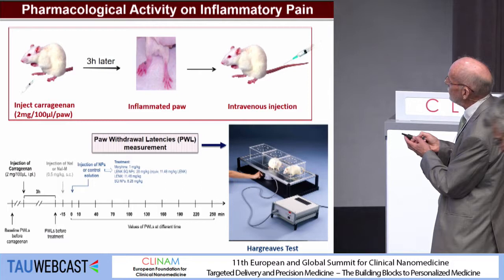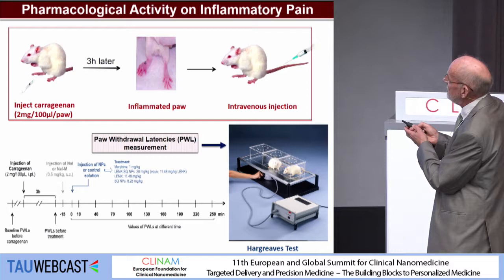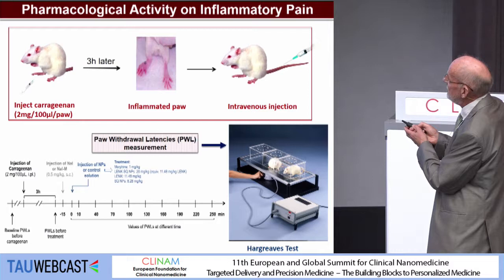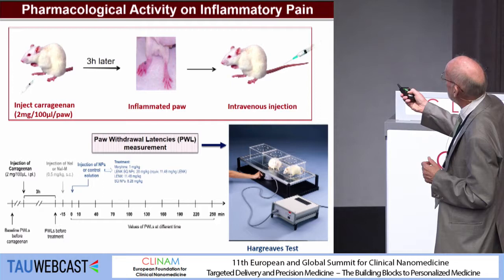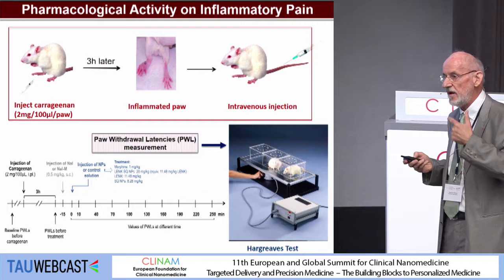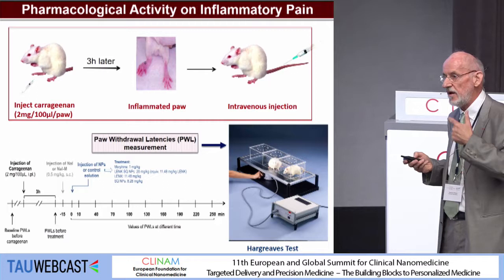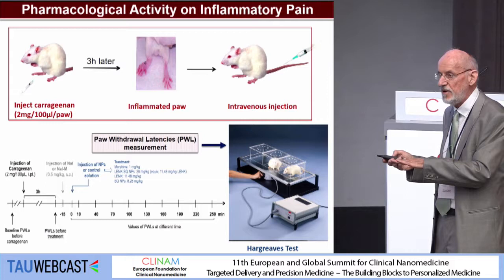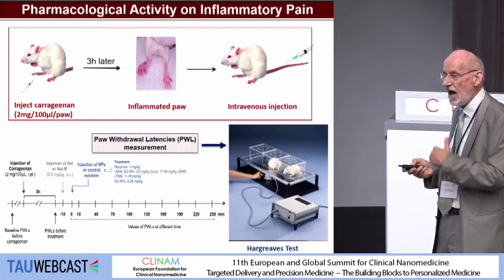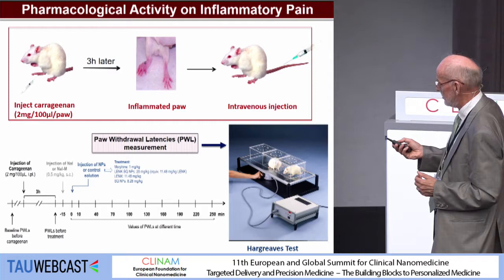We tested these nanoparticles for pharmacological activity on inflammatory pain. The model involves first injecting carrageenan into the right paw. After three hours, an inflamed paw with inflammatory pain develops. Treatment is then started with either leu-enkephalin squalene nanoparticles, free leu-enkephalin peptide, or antagonists. We use the Randall-Selitto test — a hot plate — measuring paw withdrawal latency: the longer the latency, the more analgesic the treatment.